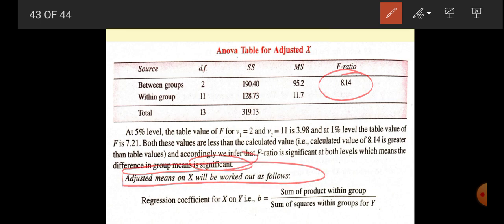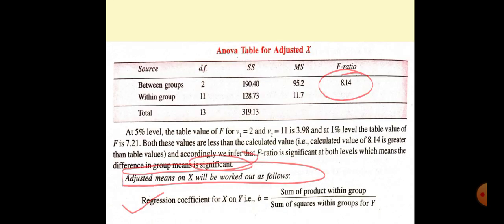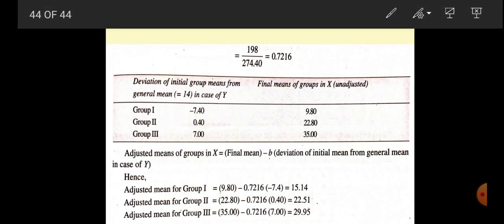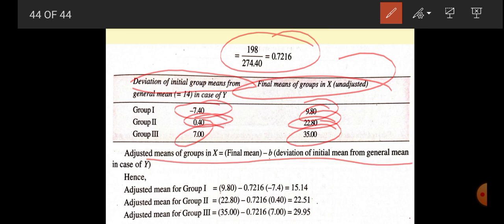Adjusted mean for X will be worked out with the help of the following formula. Regression coefficient for X on Y, B equals sum of product within group by sum of squares within groups of Y. You can calculate the regression coefficient for X on Y with the help of that formula, and the formula gives us the result 0.7216. In this way, we have got deviation of initial group from the general means and final means: 9.8, 22.8, 35. Then group 1 deviation from the initial group is this.